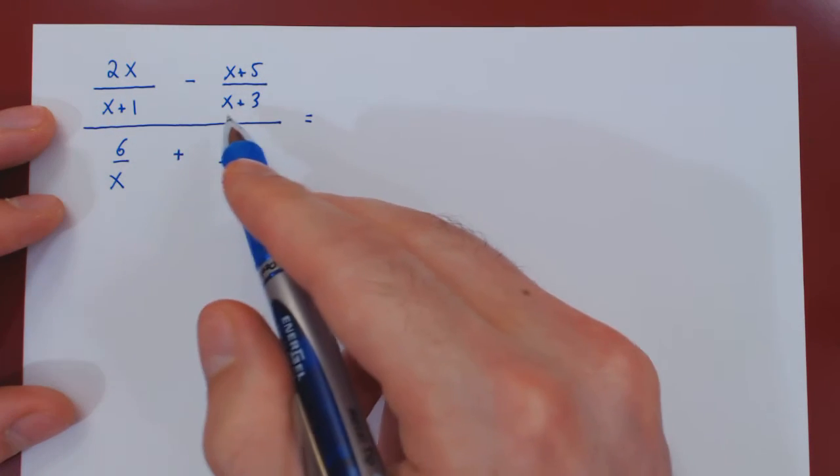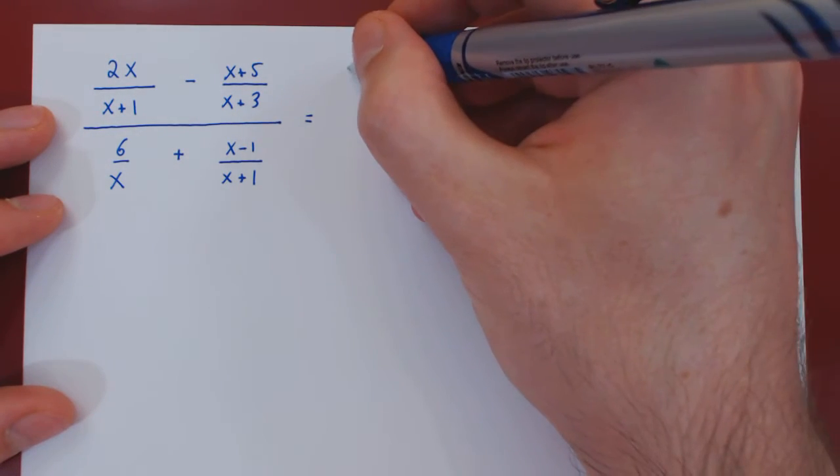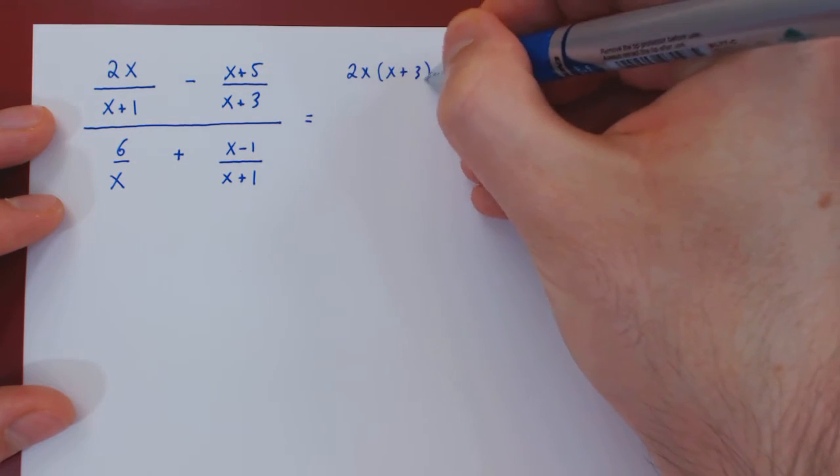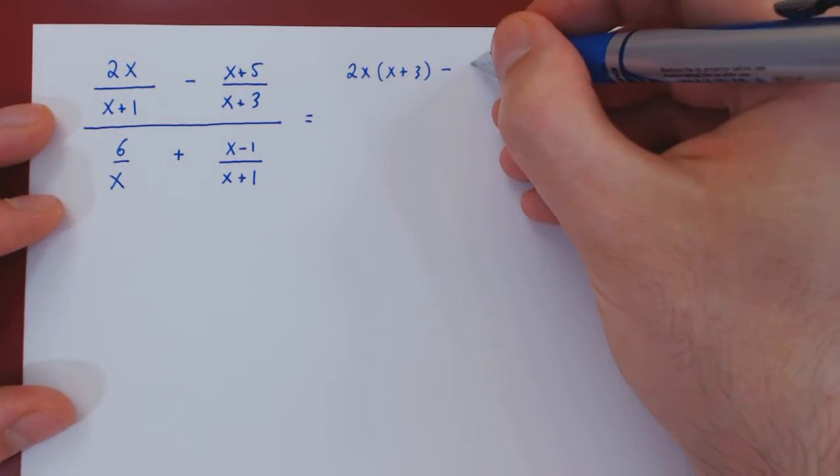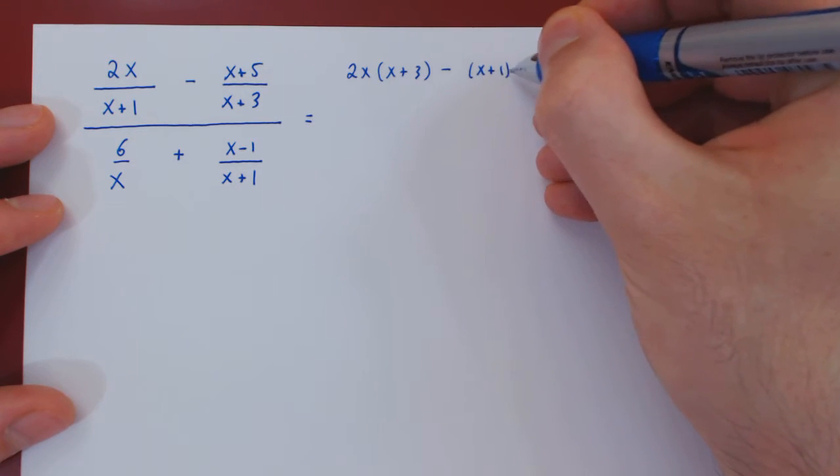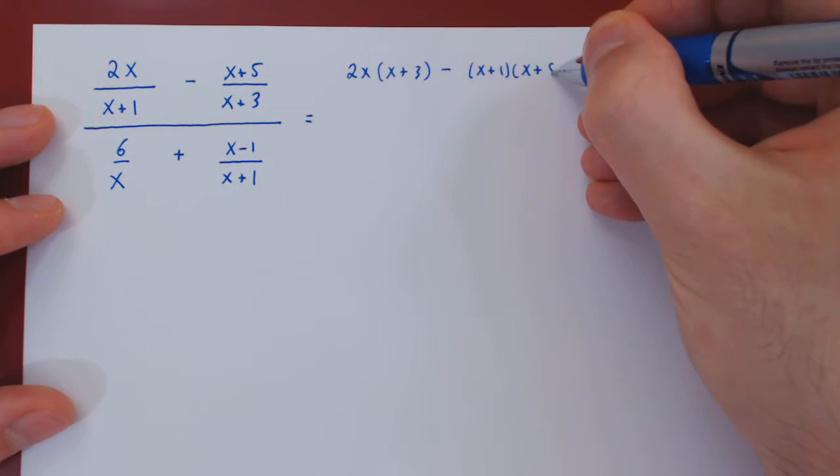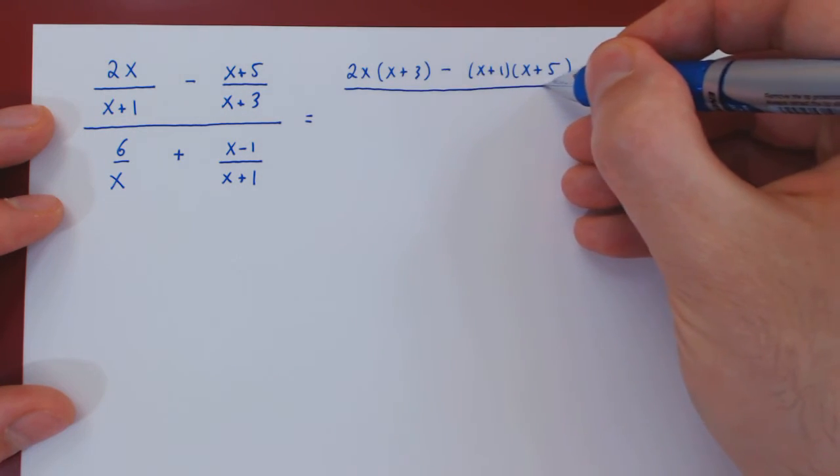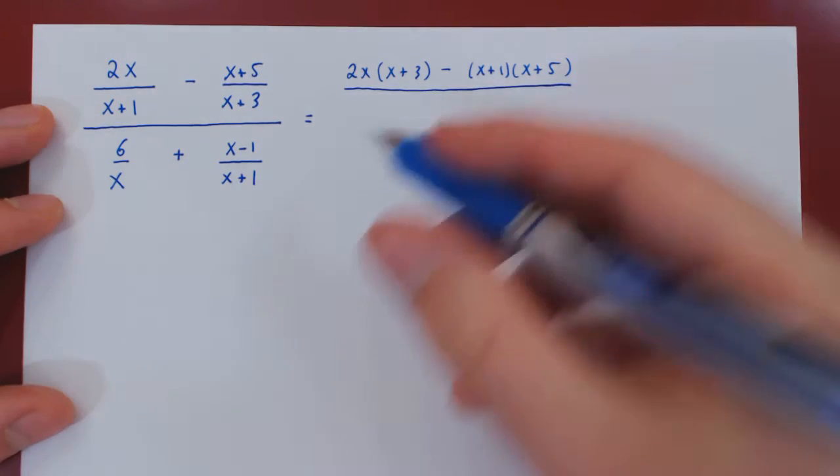So, we'll have on top 2x times (x + 3) minus (x + 1) times (x + 5) over (x + 1) times (x + 3).